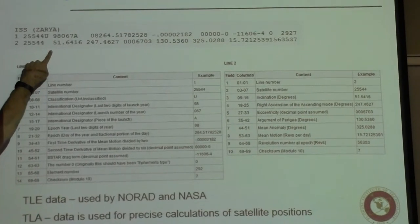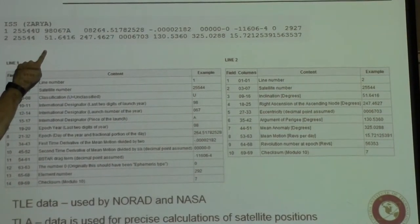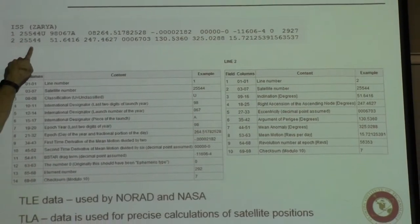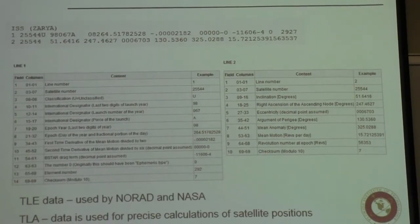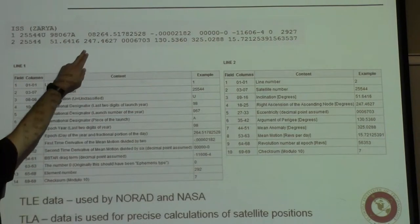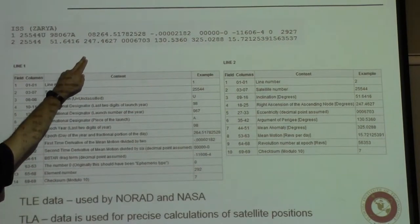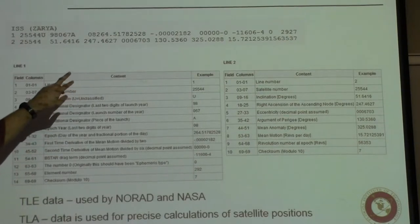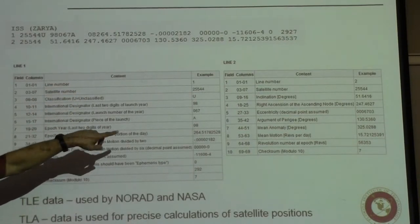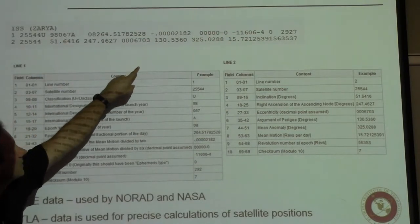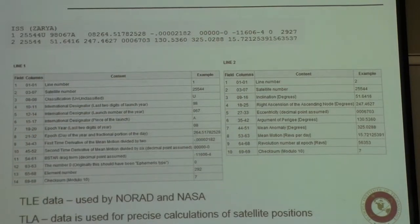Looking mostly at the second line, you can see 51.64 degrees — that's the inclination, the first orbital parameter. The next field is the right ascension angle, capital Omega. Then, the sixth field — 130.5360 — is the argument of perigee. Those are the three parameters giving the location of the orbit. To locate the satellite within the orbit, you're also given the eccentricity, the mean anomaly (from which you can calculate the time of perigee passage), and mean motion (from which you can calculate the semi-major axis).